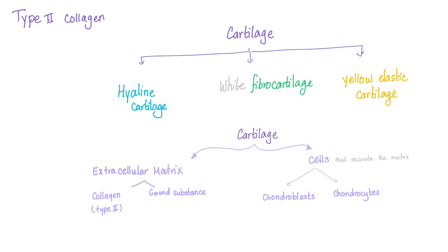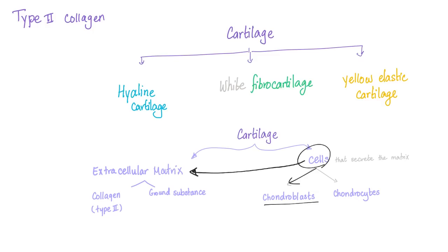Cartilage has type 2 collagen. We have hyaline cartilage, white fibrocartilage, and yellow or elastic cartilage. Cartilage consists of extracellular matrix — made of collagen type 2 and ground substance — and cells that produce the matrix. We have the chondroblast and the chondrocytes, which are the immature cells.